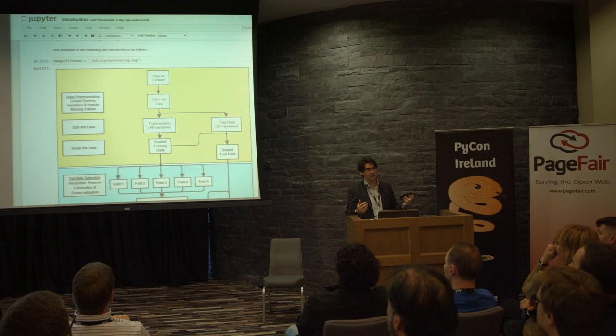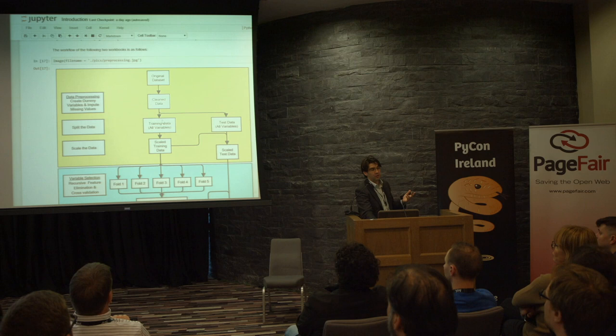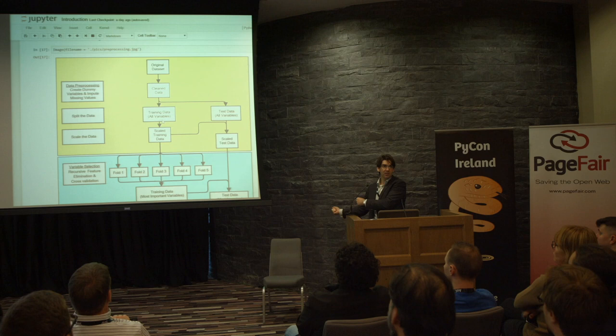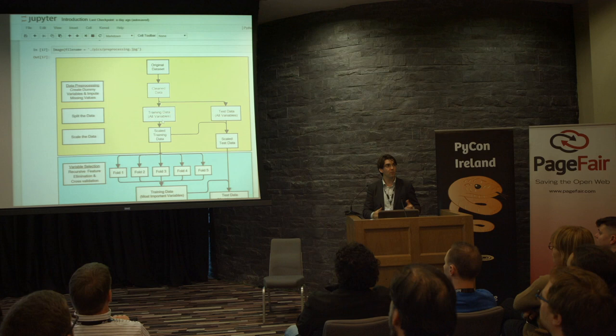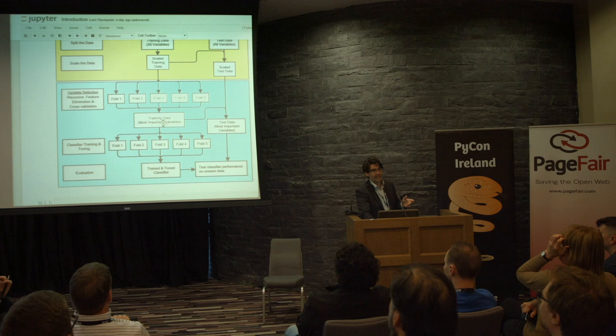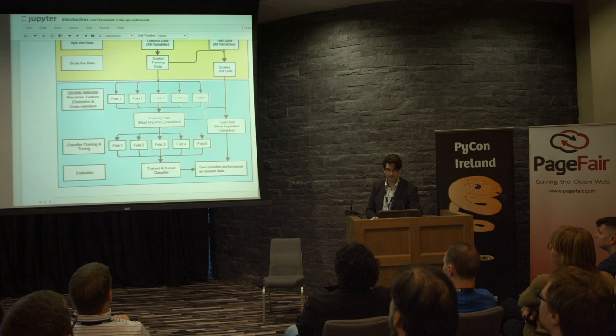This is just a workflow of the machine learning process I followed. I used two notebooks — one for data preprocessing, and one for machine learning. Machine learning isn't just chucking data in and getting wonderful results out the other end. There are an awful lot of steps, and it's that combination of steps that gets you good supervised classifications. I'll discuss the preprocessing notebook, and then come on to a support vector machine classification that I used.